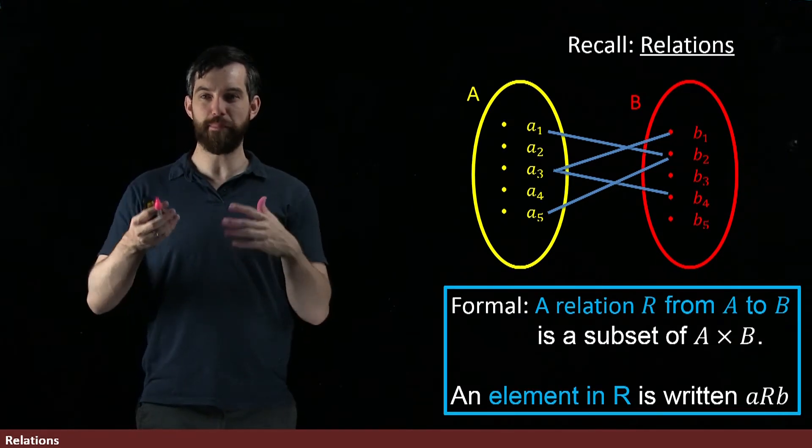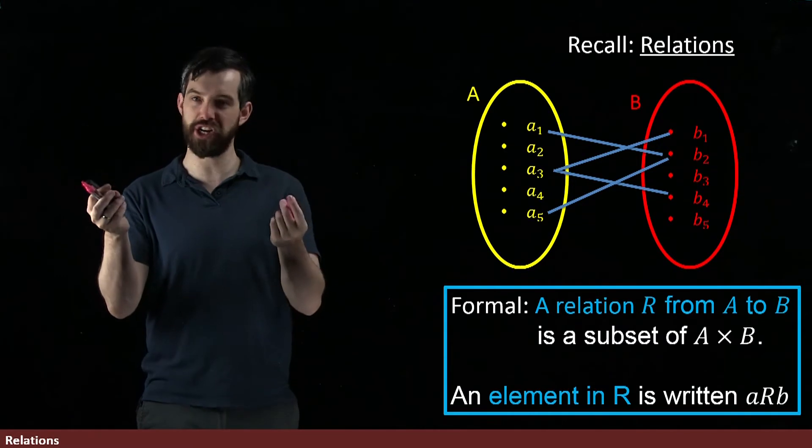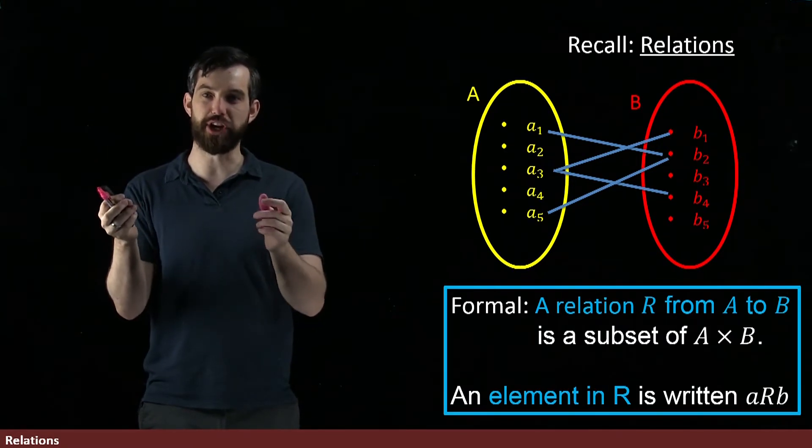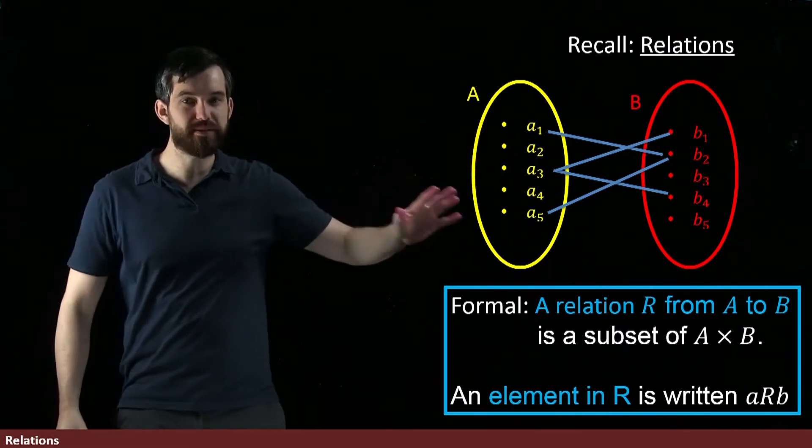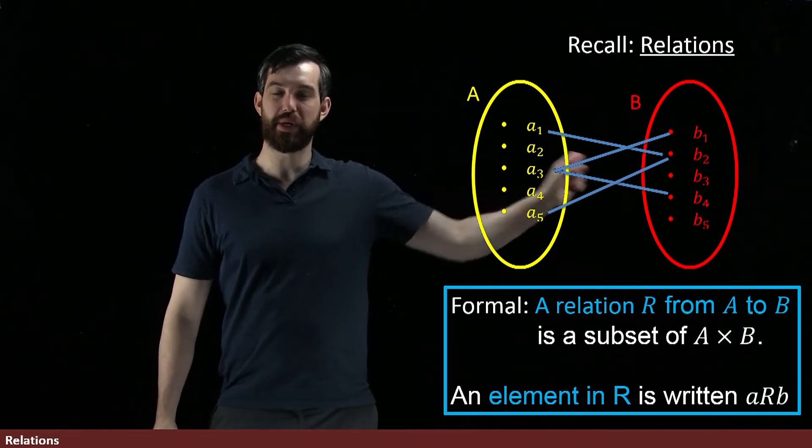And then we say that some pair, like say, A1, B2, that is an element of your relation if, when you look at this arrow diagram, A1 really is related to B2.